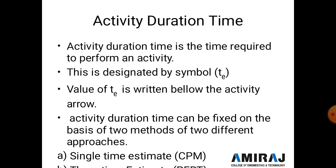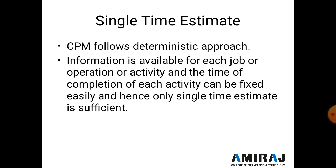Activity te time is written on the CPM diagram in the form of days, weeks, months, etc. The activity duration time can be fixed based on two methods: single time estimate and three time estimate. In single time estimate, only one time is given — the estimated time (te), where 'e' means estimated and 't' means time. In three time estimate, used in PERT, three time durations are given.